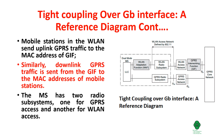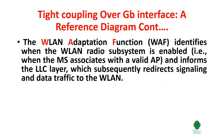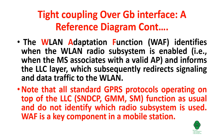The MS has two radio subsystems: one for GPRS access and another for WLAN access. The WLAN Adaptation Function (WAF) identifies when the WLAN radio subsystem is enabled — that is, when the mobile associates with a valid access point — and informs the LLC layer, which subsequently redirects signaling and data traffic to the WLAN. Note that all standard GPRS protocols operating on top of the LLC, such as SNDCP and GMM, function as usual and do not identify which radio system is used. WAF is a key component in the mobile station.